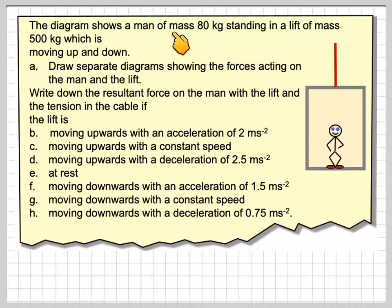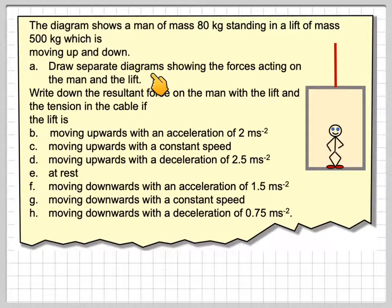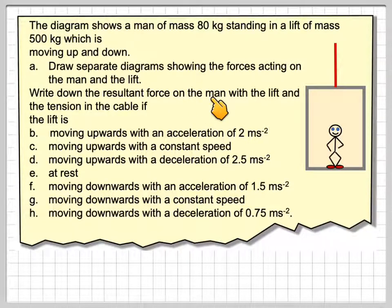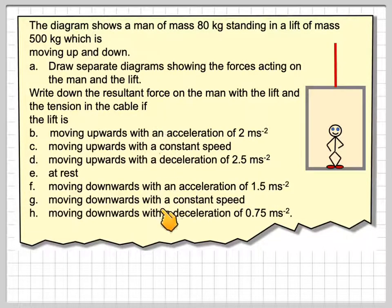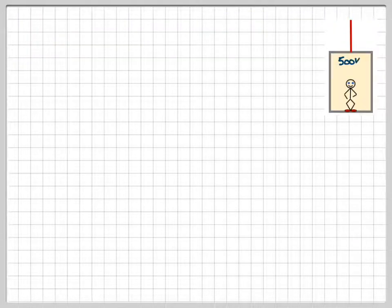The diagram shows a man of 80 kilograms standing in a lift of mass 500 kilograms which is moving up and down. Draw a separate diagram showing the forces acting on the man and the lift, and write down the resultant force on the man and the lift, and the tension in the cable for various conditions. Before we start, let's draw the force diagram.